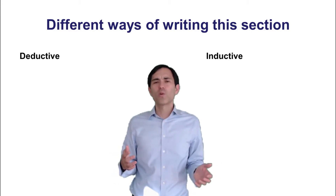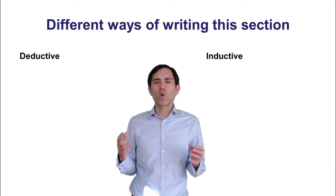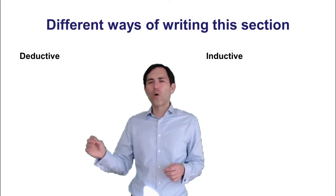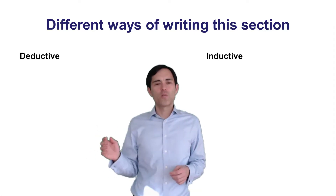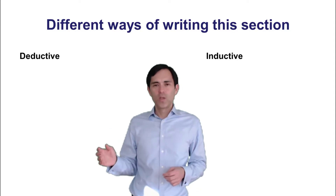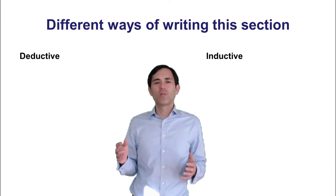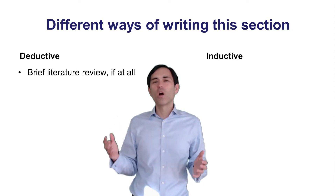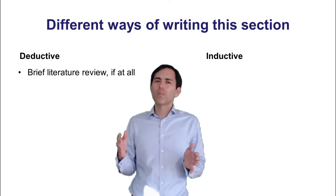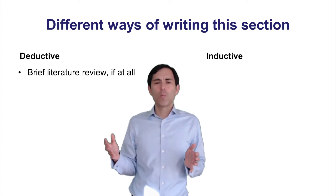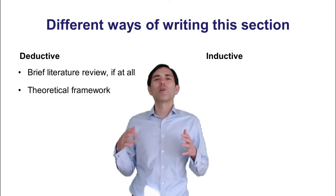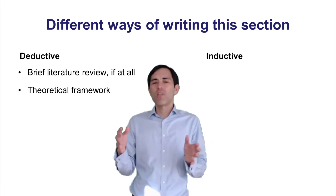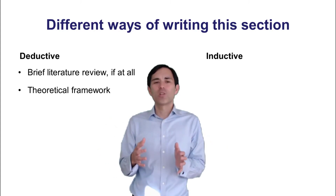The deductive approach is fairly standardized — there's almost a boilerplate you should follow, including in particular the theory section. For a typical deductive study, you would start with the literature review — very often a rather brief one, and in some cases not even that is necessary. But what is important is that you develop your theoretical framework. Sometimes the literature review and theoretical framework are integrated into one section together.